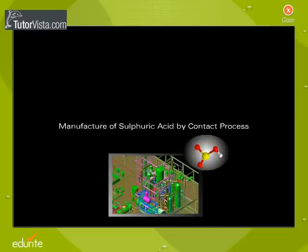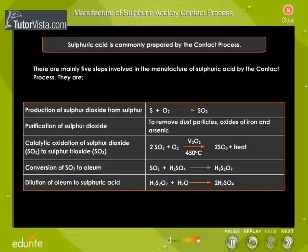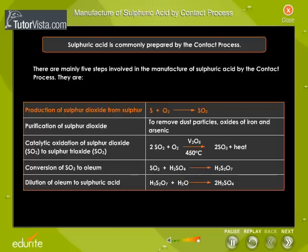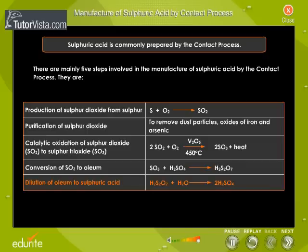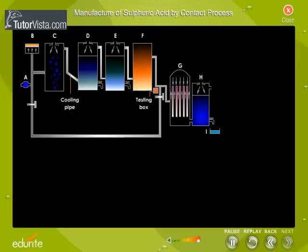Sulfuric acid is commonly prepared by the contact process. There are mainly five steps involved in its manufacture: production of sulfur dioxide from sulfur, purification of sulfur dioxide, catalytic oxidation of sulfur dioxide to sulfur trioxide, conversion of sulfur trioxide to oleum, and dilution of oleum to sulfuric acid.